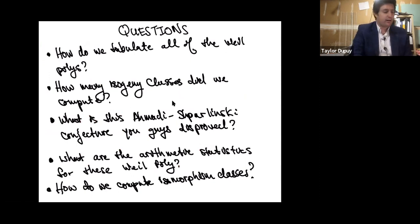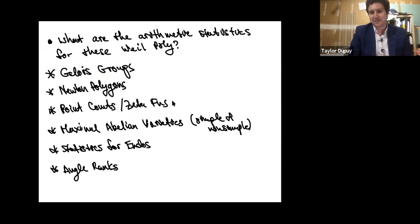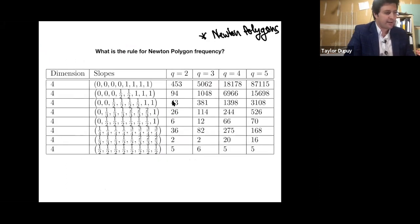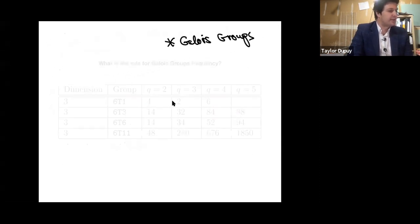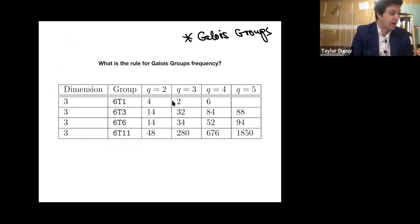Going back to the isogeny classes and arithmetic statistics — we can talk about Galois groups. We can compute the Galois groups of the Weil polynomial in characteristic zero. This has a little to do with the Weyl group of the connected component of the L-adic monodromy group. The most prevalent Galois groups are these 6T11 ones — this is the Weyl group of Sp_{2g}, which is C_2^g semidirect product S_g, so a symmetric group acting on F_2^g by permutations.